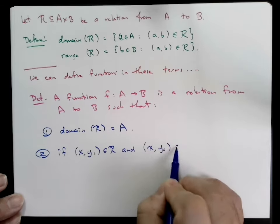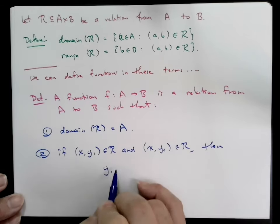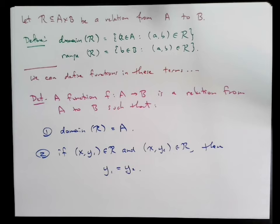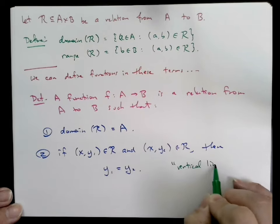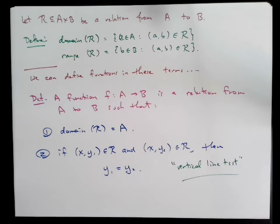And if we ever see the pair (x, y1) and the pair (x, y2) in the relation, then it must be that y1 equals y2. In this way, a function is just a special relation that has certain properties.